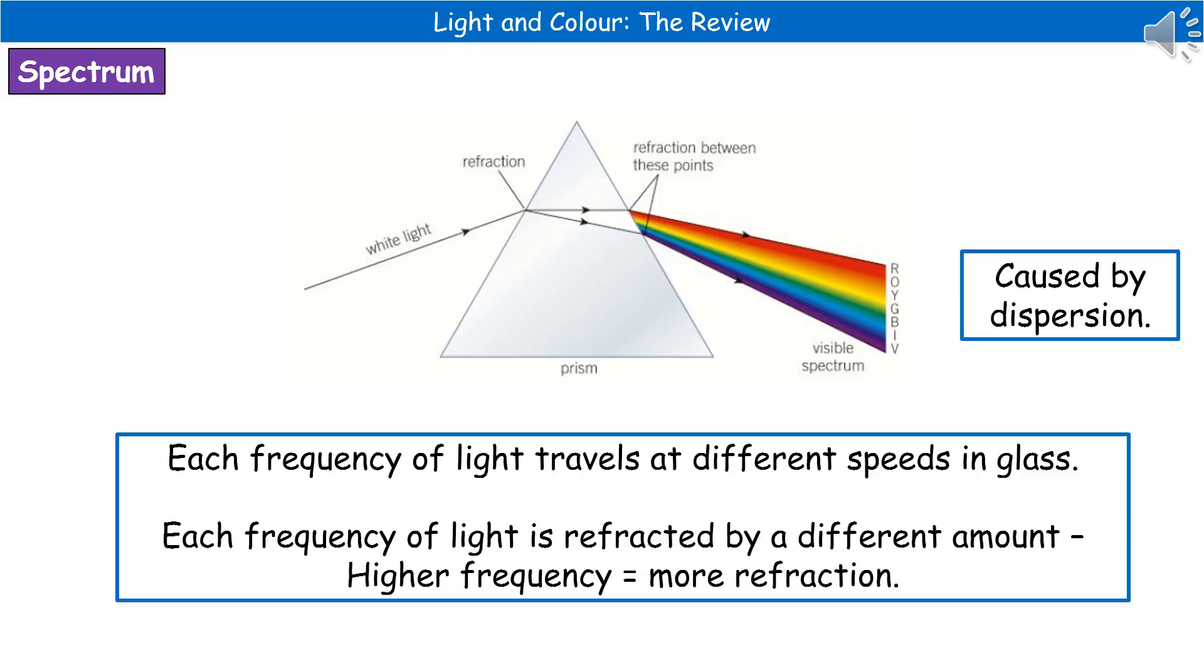Welcome to our review on light and colour. The first thing you can see on the screen is what's going to happen if we pass white light through a prism.